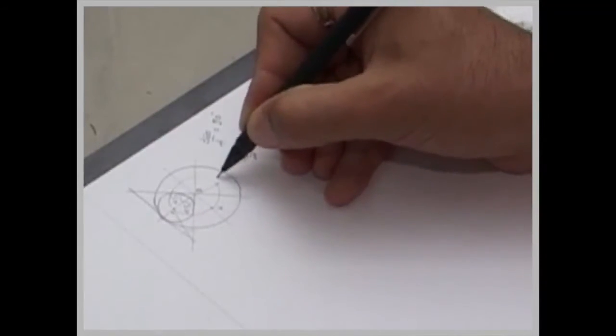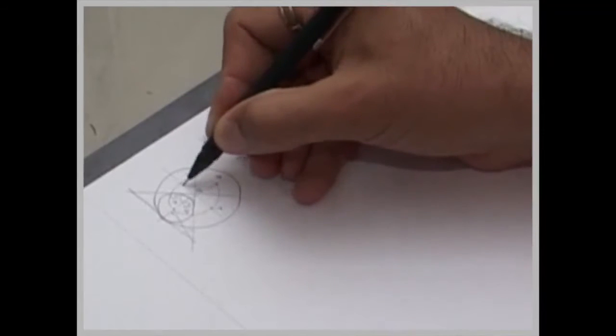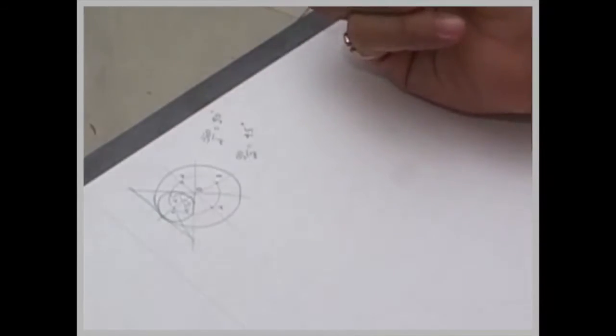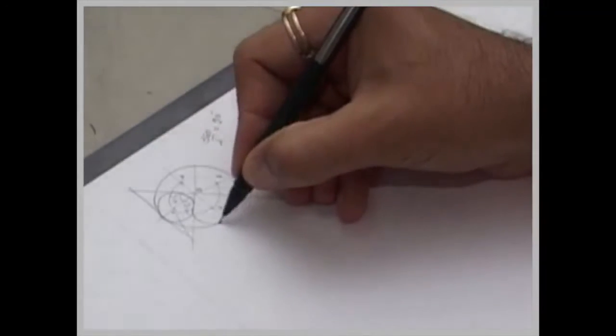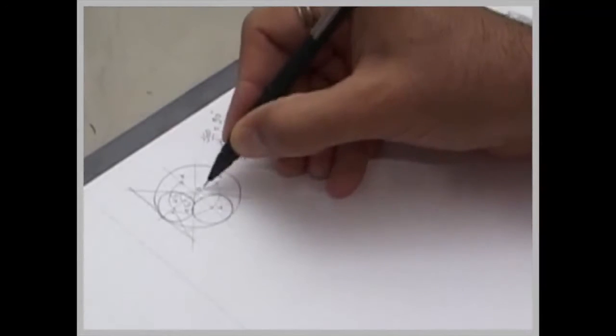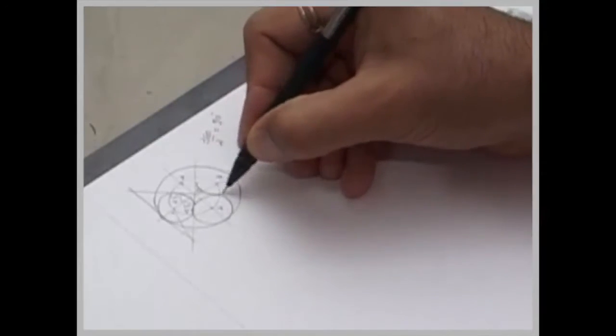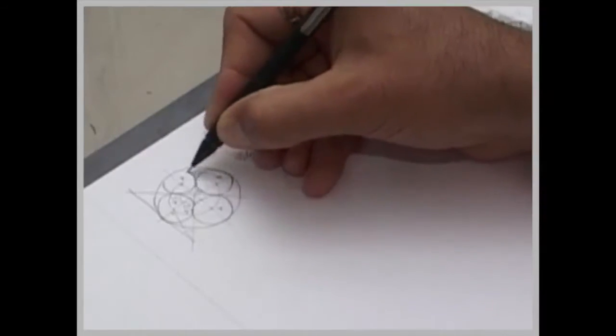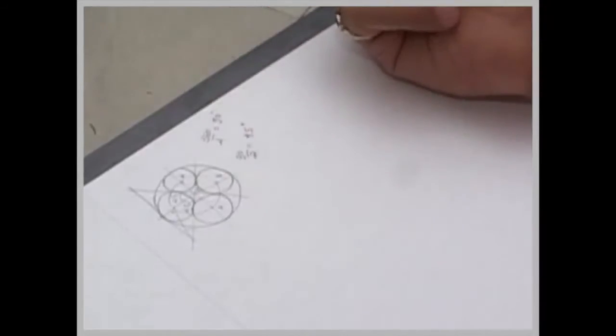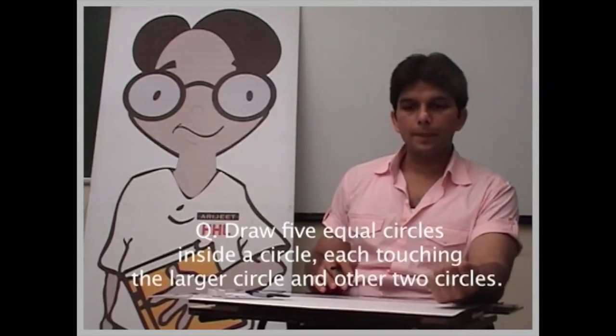This is 0.2, this is 0.3, this is 0.4. So now in this case what we are going to do? We are going to draw 5 circles inside a circle.